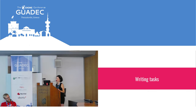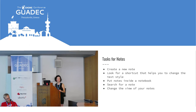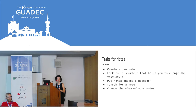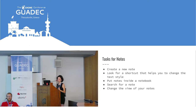The next step after choosing users is to write tasks. The tasks we write are always very direct, because we want users to accomplish them to show how they behave with the software and how they discover how to use it. For my Notes test I created tasks like: create a new note, look for a shortcut to change the text style, put notes inside a notebook, search for a note, change the view of your notes. They are very objective and direct.